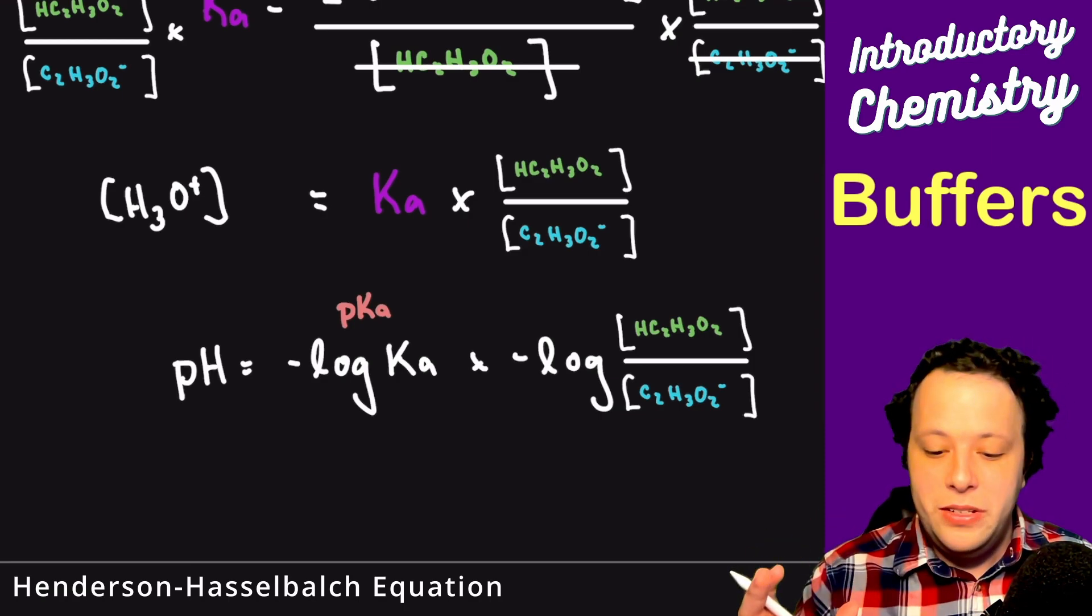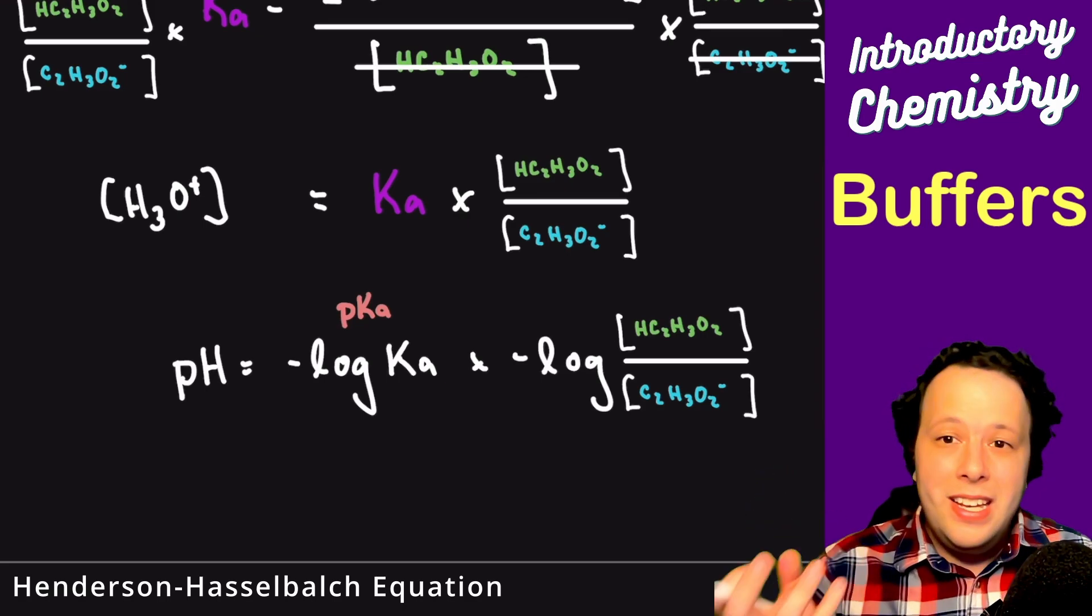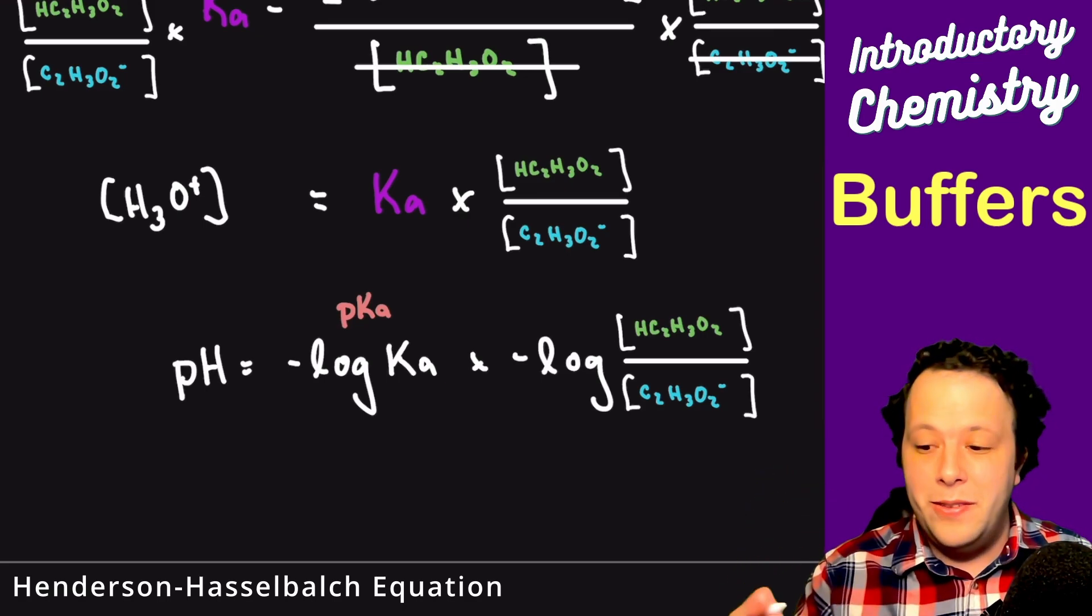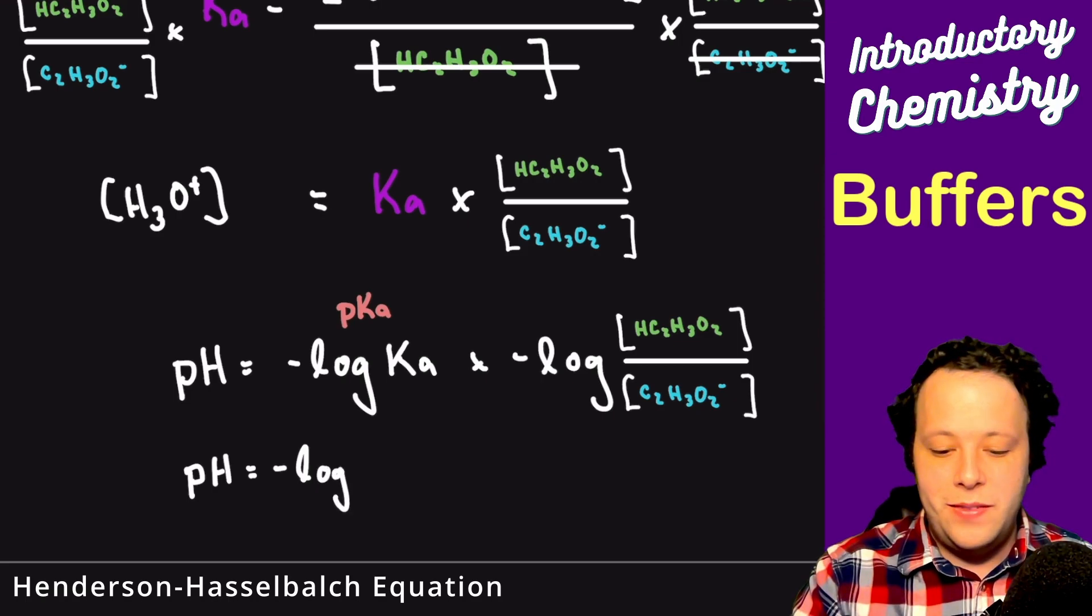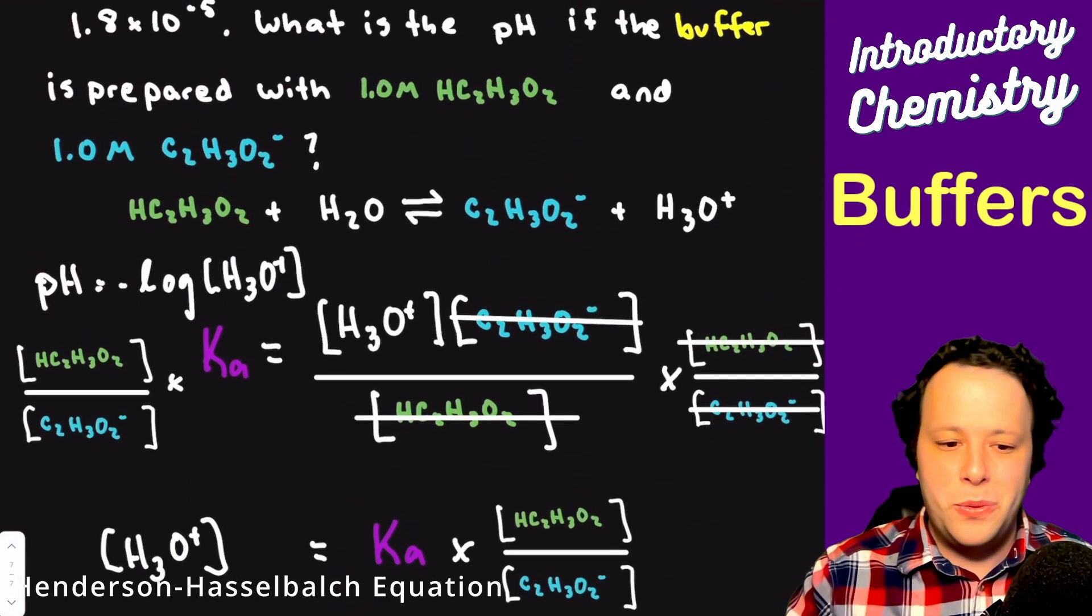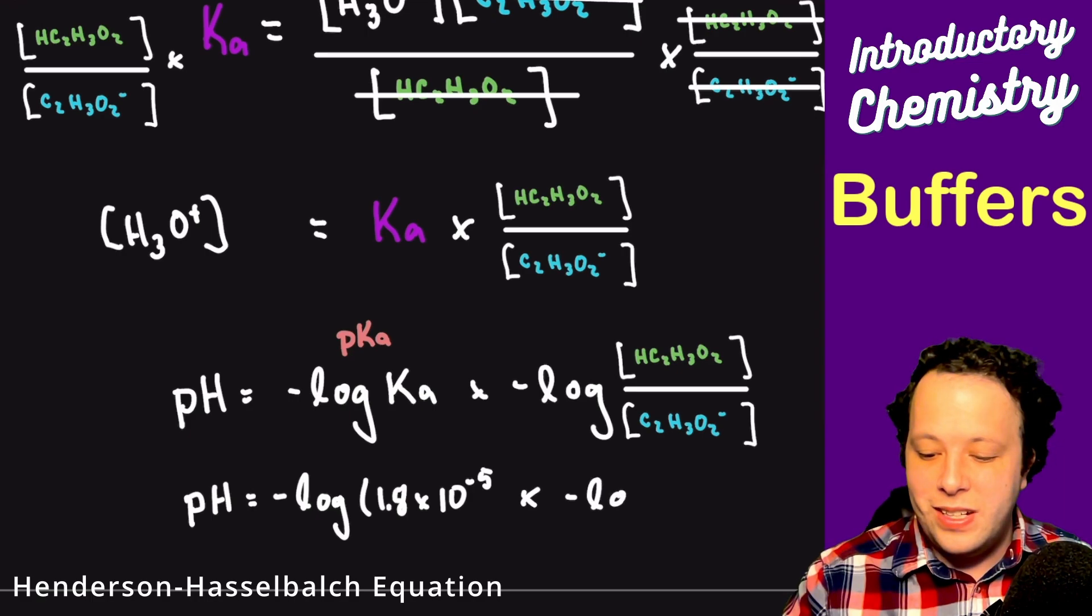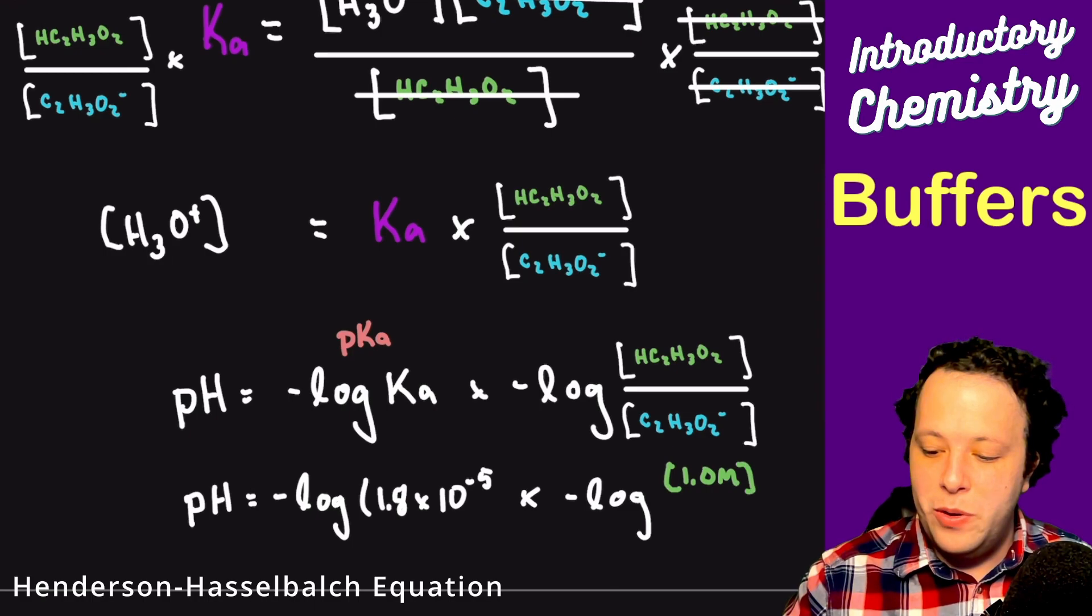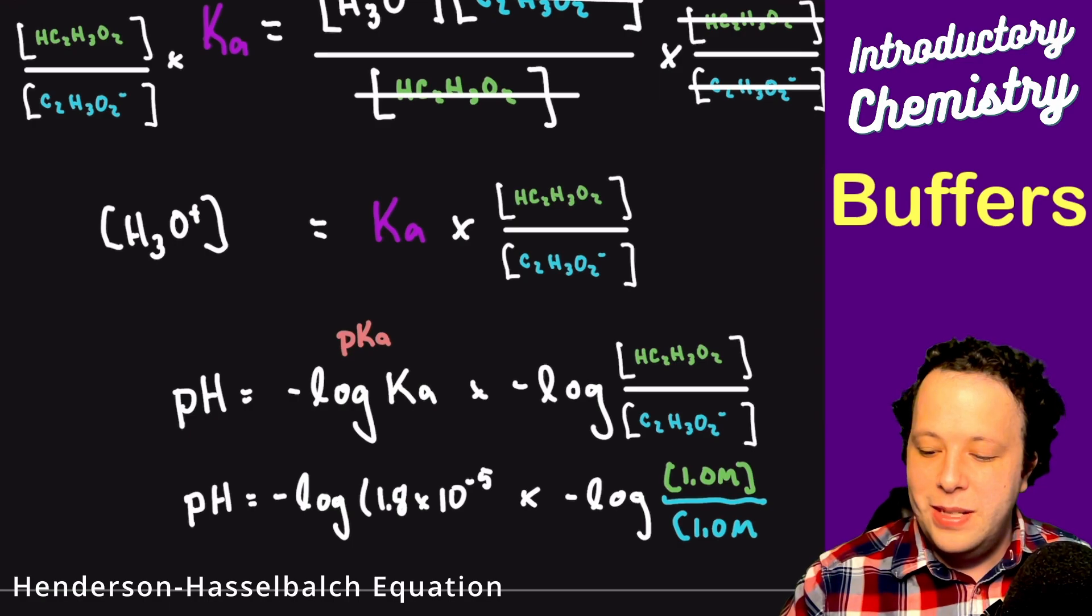What we do here is we take that negative log of the Ka, negative log of our acids and bases, and we can plug all of our different components in that we started with the problem. If I take my pH equal to negative log of our Ka value, which from earlier was 1.8 times 10 to the negative 5, and then essentially we multiply that by the negative log of our concentrations, which were 1 over 1, so it was 1 mole divided by 1 mole.